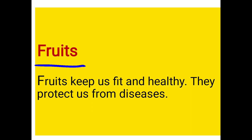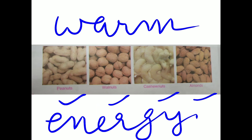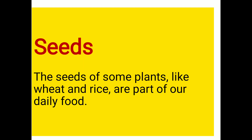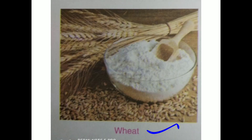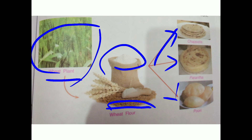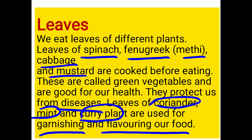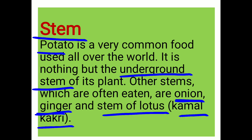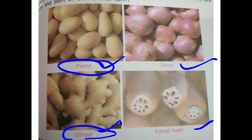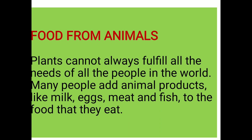So these are the parts of the plant. I have explained the parts of the plant which are eaten as food. From plants we get seeds, leaves, stems, roots and fruits. Apple, mango and papaya are examples of fruits.